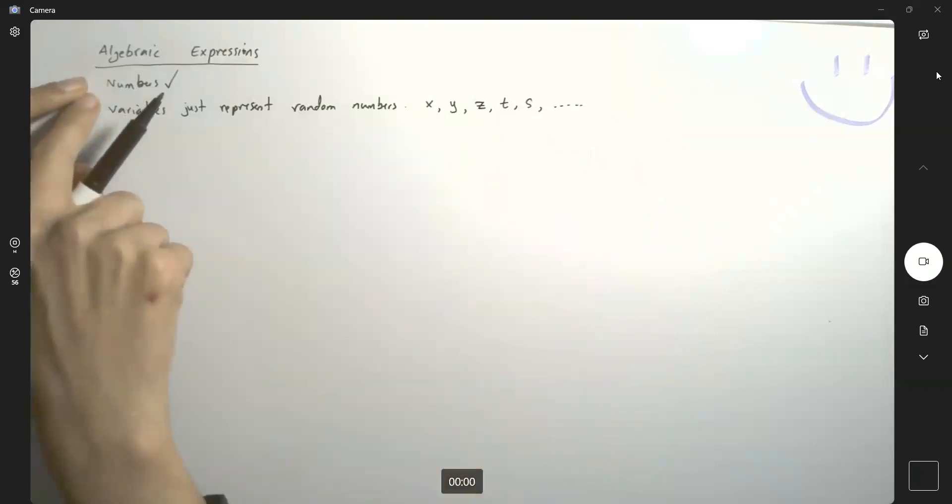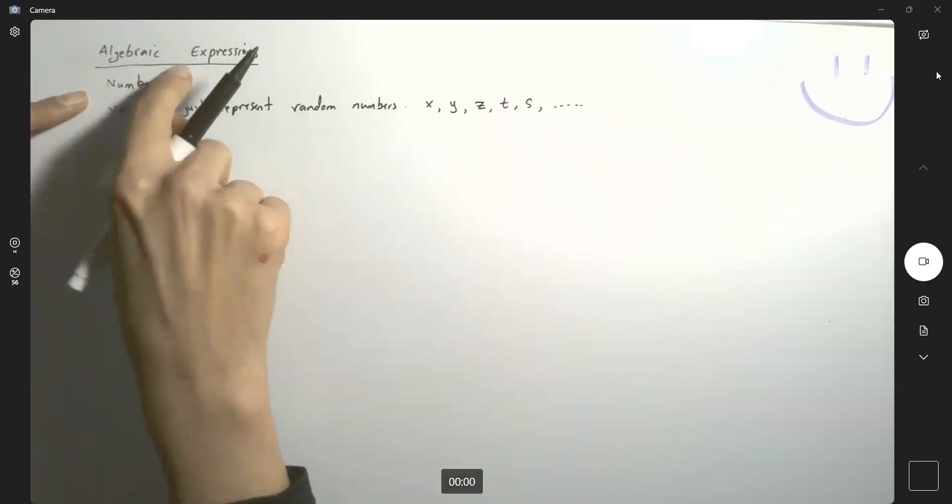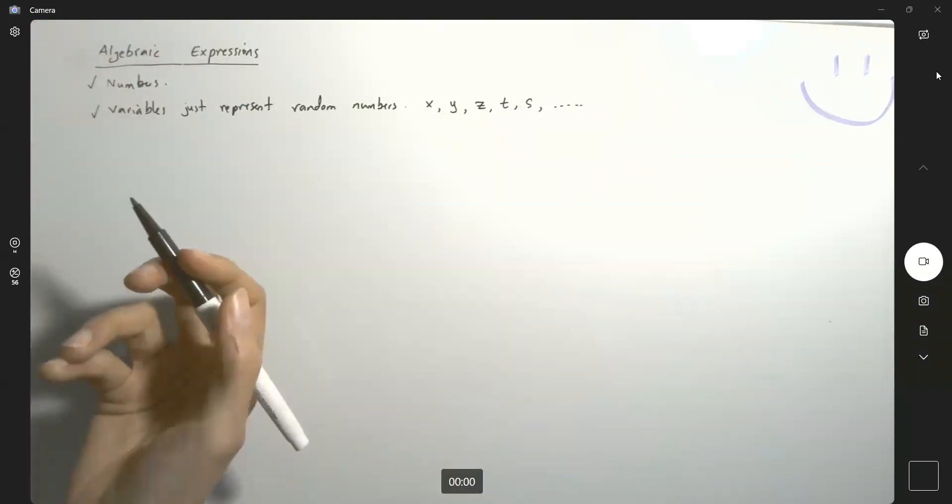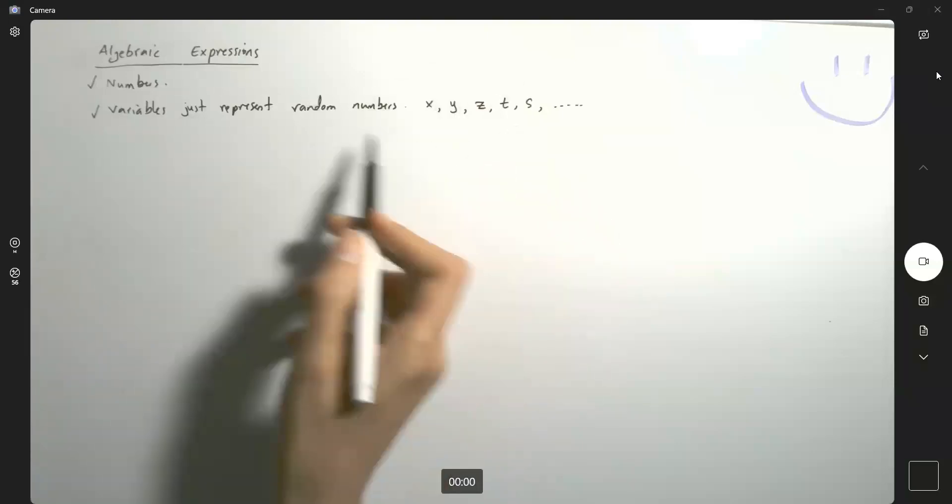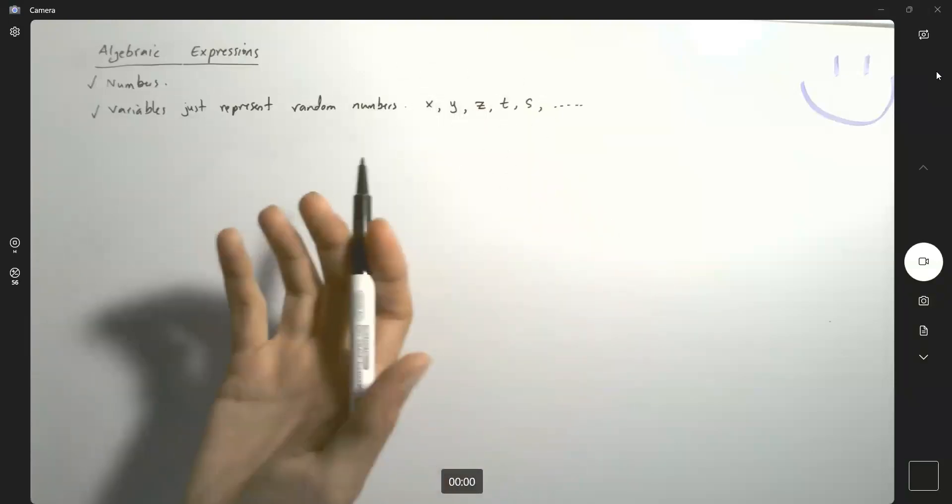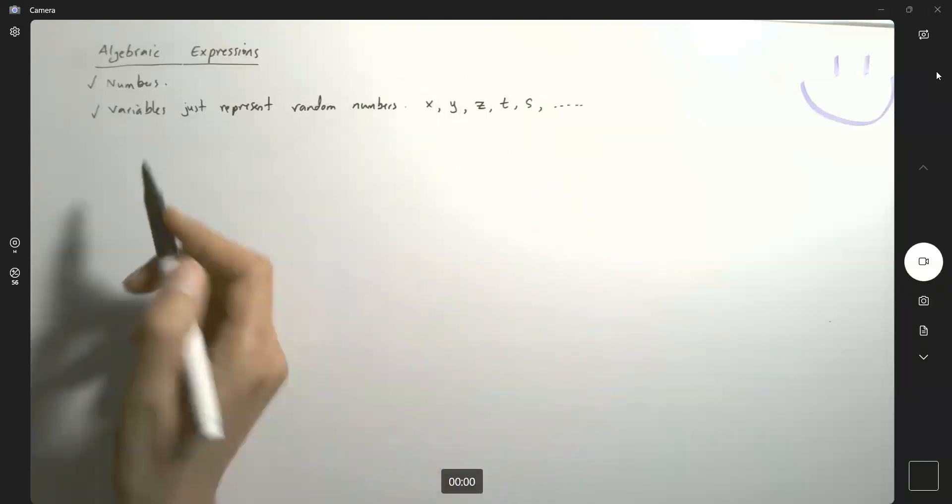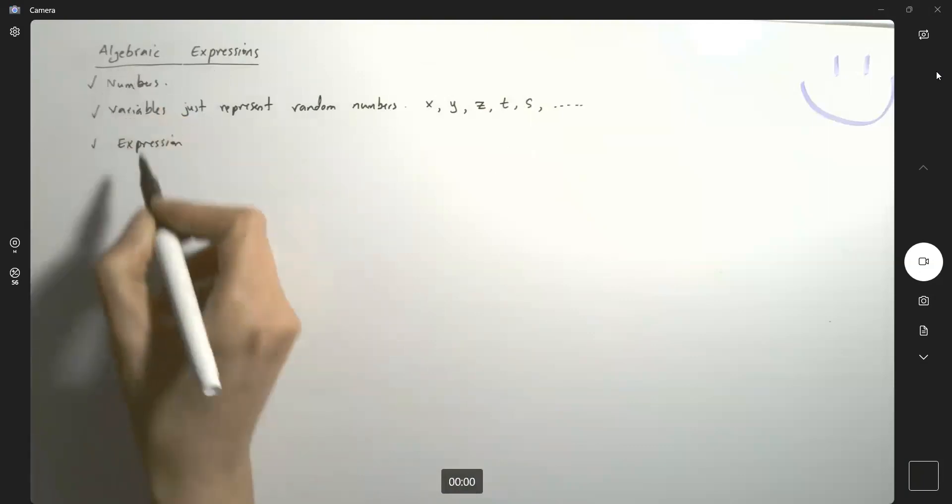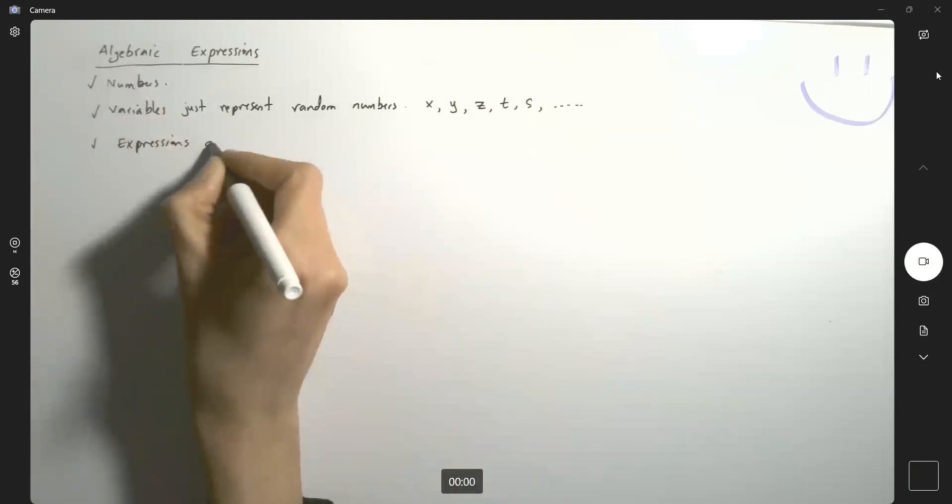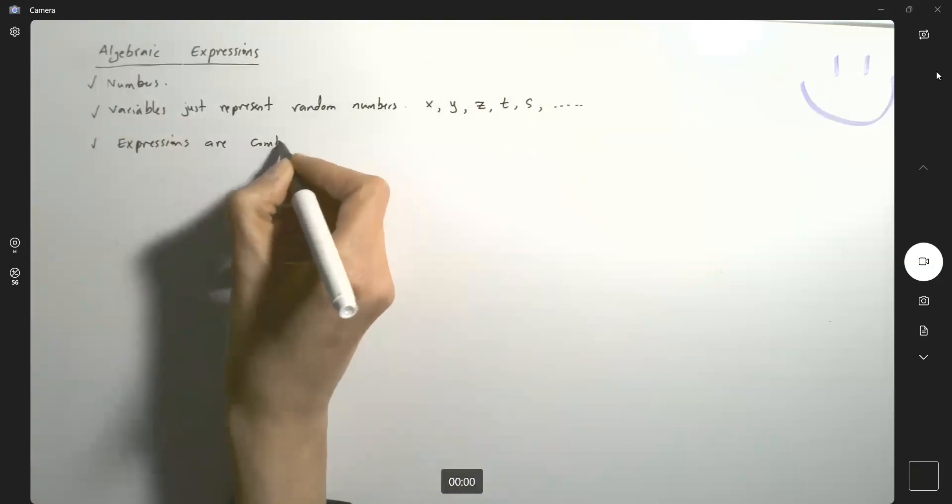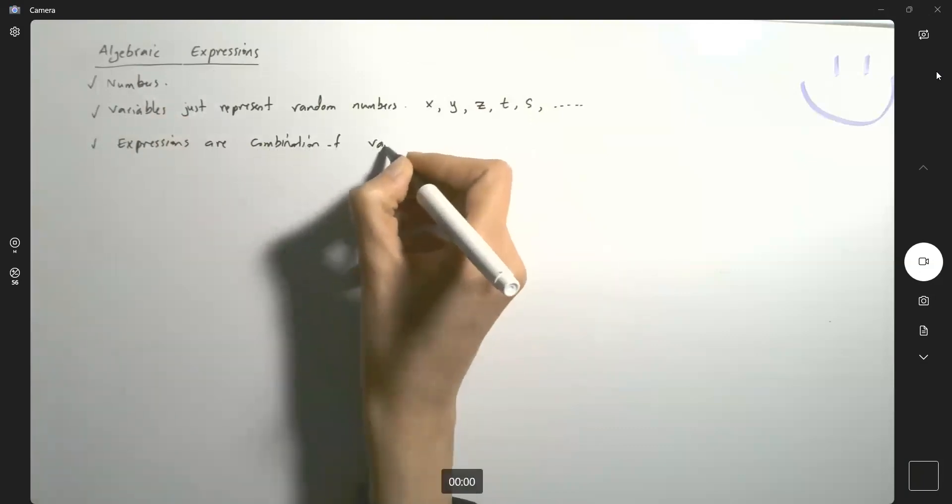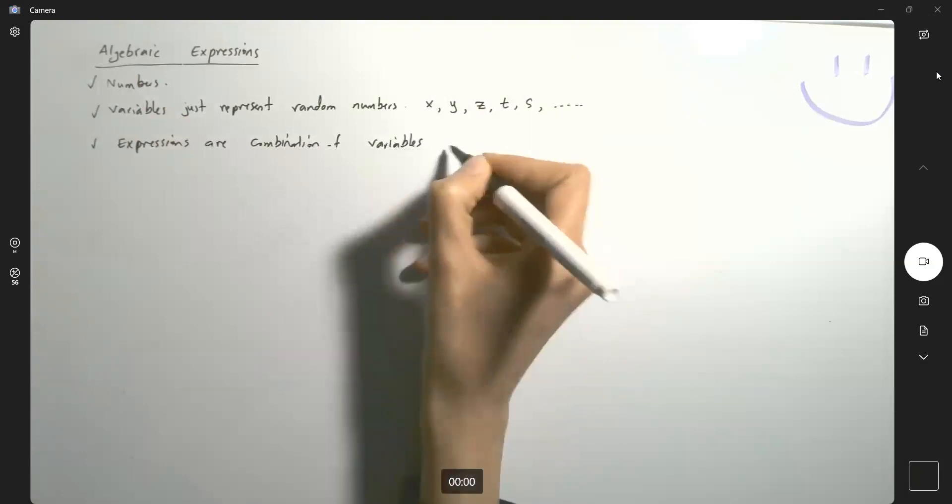So from numbers, we introduce variables. Now we say, okay, what's the next step? The next step is to combine these variables and define something new. Like what? Like expressions. So expressions, or basically algebraic expressions, are combination of variables and numbers.